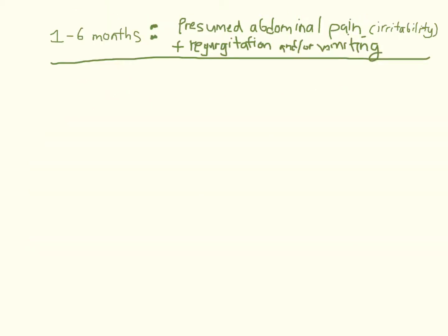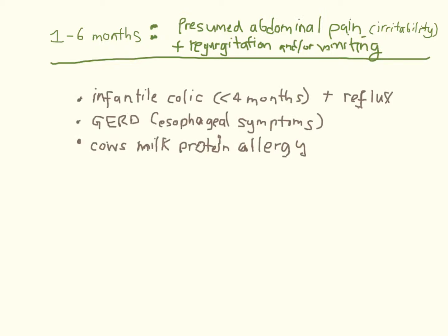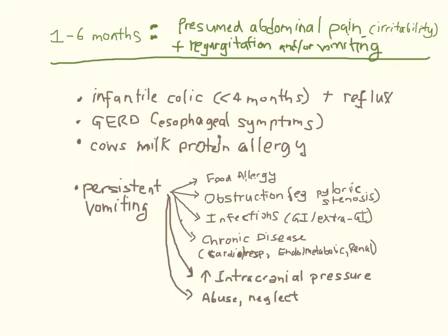Between 1-6 months, remember that the GI tract is often blamed for irritability and regurgitation. But physiological reflux and irritable periods are very common at this age, and the two may occur together but be unrelated. For instance, you can have colic and reflux, symptomatic gastroesophageal reflux disease, or cow's milk protein allergy presenting this way. While reflux episodes can occasionally trigger vomiting, true persistent vomiting raises concern for obstruction and a variety of diseases unrelated to the GI tract.